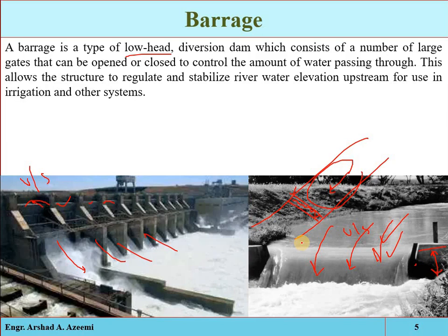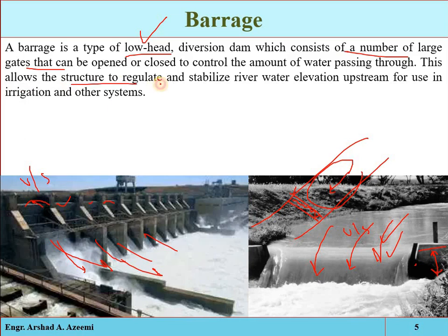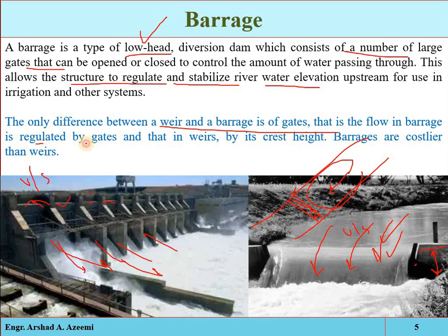A barrage is a low-head diversion dam consisting of a number of large gates that can be opened or closed to control the amount of water passing through. If the gates are completely opened, all water passes downstream with no storage and no head rise. If the gates are closed, water is stored at the upstream side and the water level is raised. This allows the structure to regulate and stabilize river water elevation upstream for irrigation purposes. The main difference between a weir and a barrage is that flow in a barrage is regulated by gates, and in a weir by the crest height.